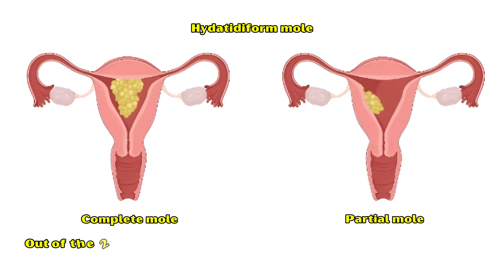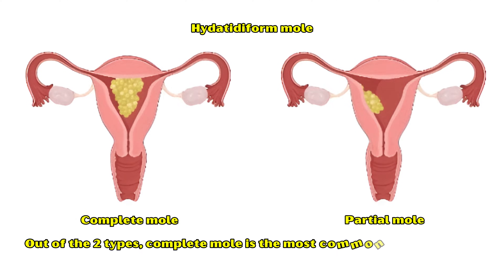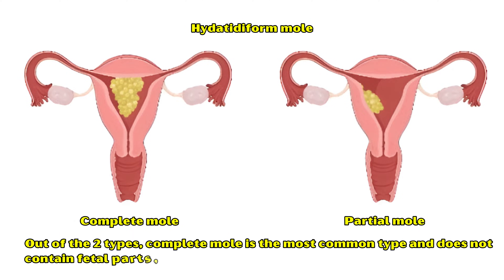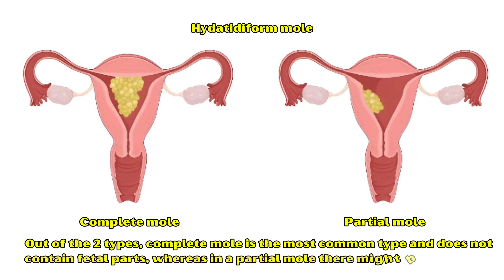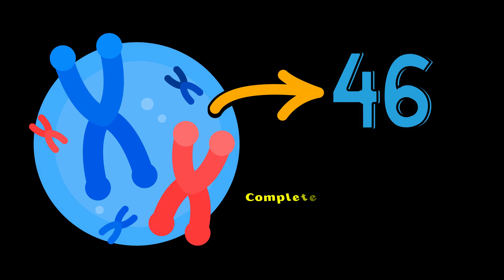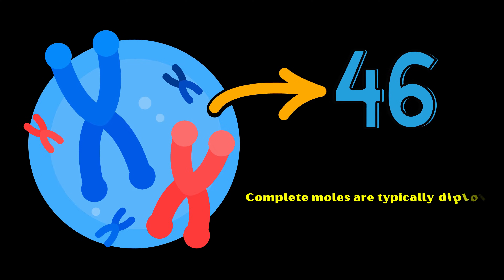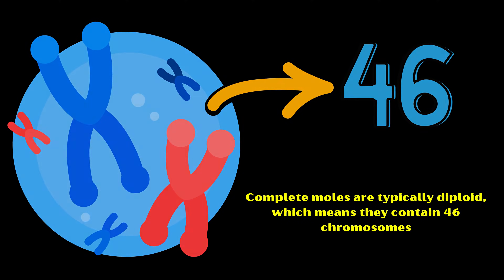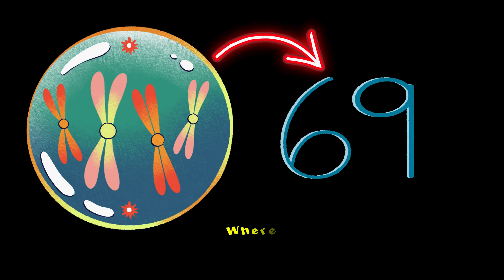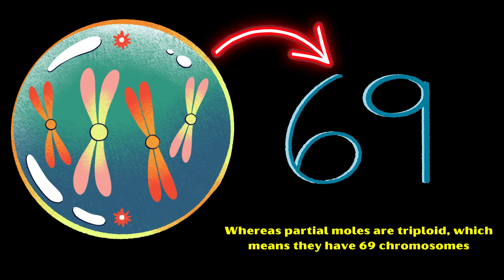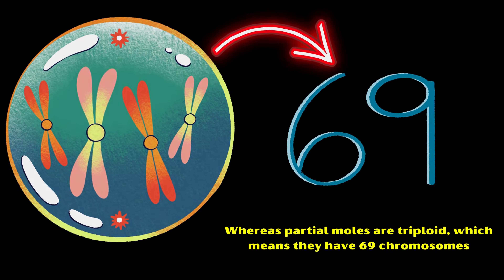Out of the two types, complete mole is the most common type and does not contain fetal parts, whereas in a partial mole there might be identifiable fetal residues. Complete moles are typically diploid, which means they contain 46 chromosomes, whereas partial moles are triploid, which means they have 69 chromosomes.